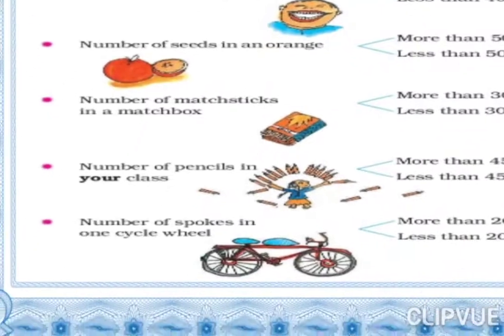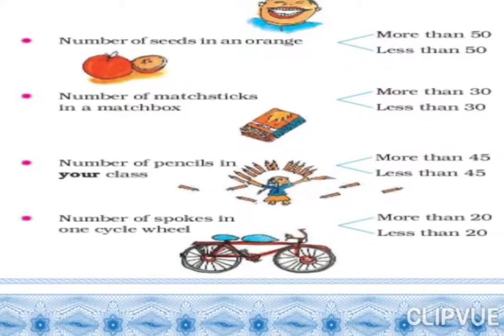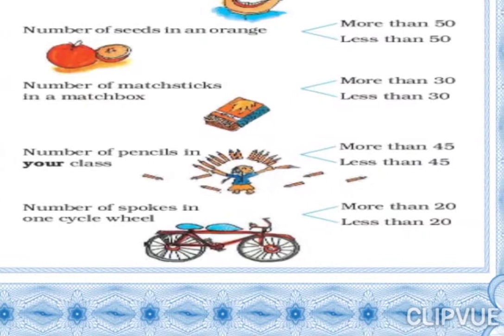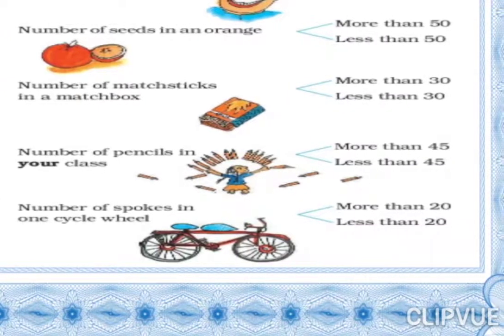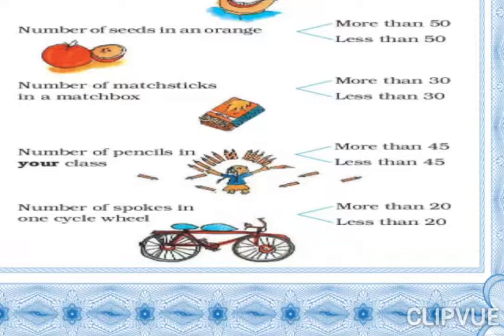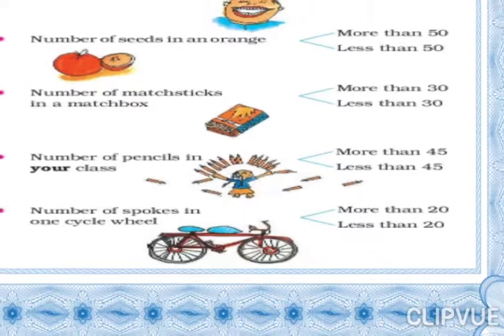Next: number of spokes in one cycle wheel. Yeh cycle ka jo wheel hota hai, uske andar jo spokes hote hain — woh kitne hote hain? More than 20, donon wheels mila kar, ki less than 20?